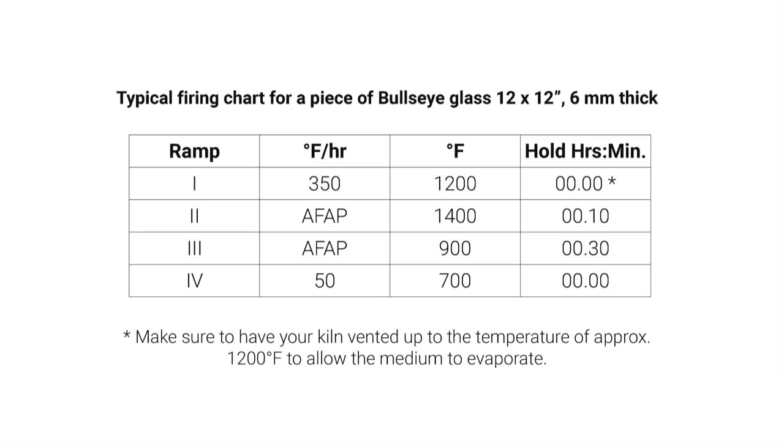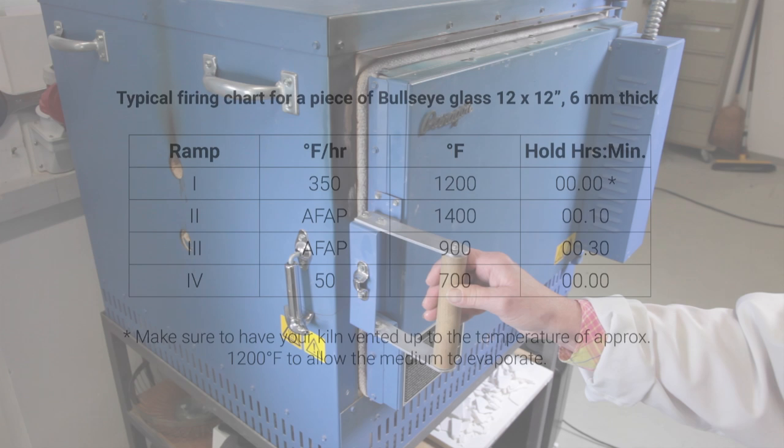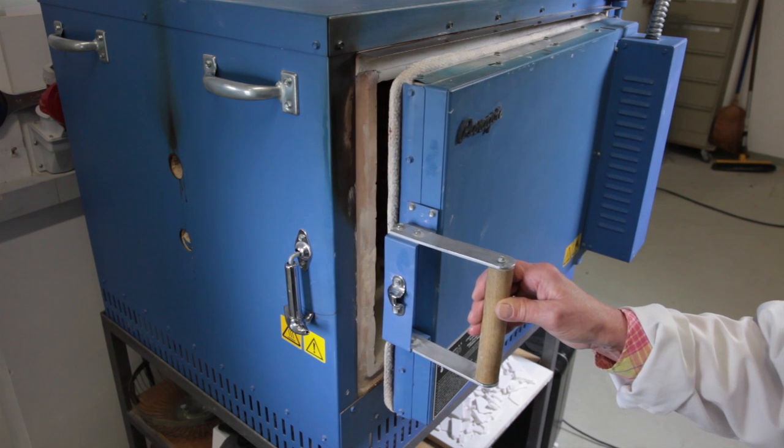The following chart will give you the parameters of a typical firing. Make sure to have your kiln vented up to the temperature of approximately 1,200 degrees Fahrenheit to allow the medium to evaporate.